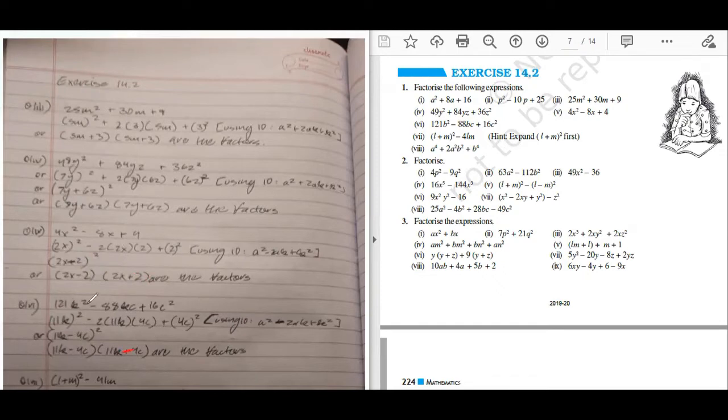So 121, 11, 16 is 4, 11b minus 4c. This is correct.